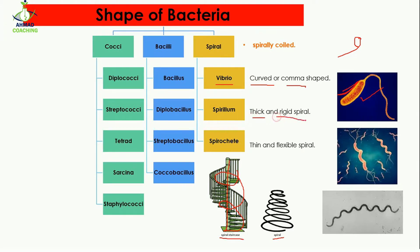Spirillum bacteria are thick and rigid spirals — you can see they are thick and rigid in structure, which is why they are known as spirillum. The third shape is spirochetes, which are thin and flexible. In comparison to spirillum, spirochetes are thinner and more flexible, which is why they are known as spirochetes.